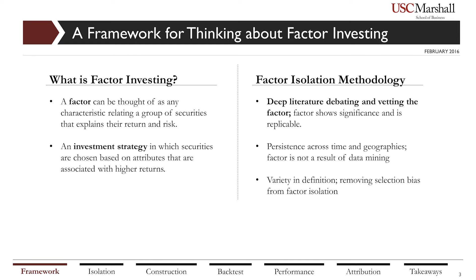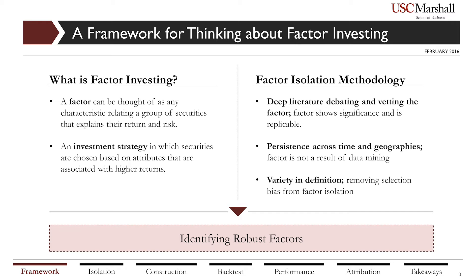The first criteria is deep literature debating and vetting the factor. We look for factors debated to such an extent that we cannot credit the premium returns to either coding errors or one very particular definition. For example, Fama and French's breakthrough research on value has been cited over 14,000 times. The second criteria is persistence across time and geographies — a factor that only earns a premium in the US may be an artifact of the data. The last criteria is variety in definition; for example, both the book-to-market ratio and P/E ratio are reasonable definitions of value, and contradictory results would suggest data mining.